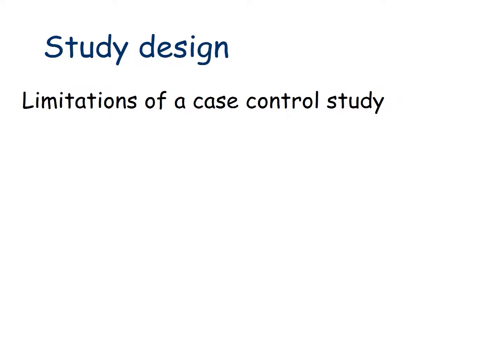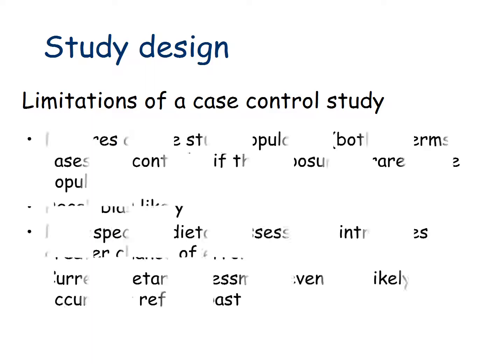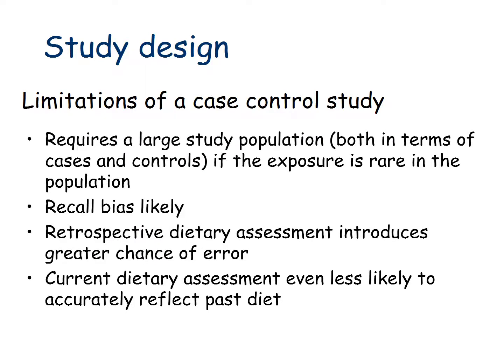One of the major limitations of a case control study is that if an exposure is rare, it requires a very large study population. For example, if your exposure of interest is whether cases consumed a particular brand of bottled water, that's going to be a rare exposure, and if the disease outcome is also rare, you would not be able to do this analysis unless you had a very large study population to capture that rare exposure.